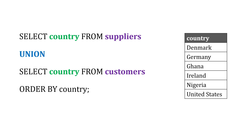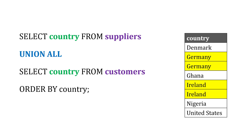When we use UNION, it's going to eliminate duplicates — we only see those countries listed once. If we want to include the duplicates, we use UNION ALL. In this example, we'd see Germany and Ireland listed twice when we use UNION ALL.